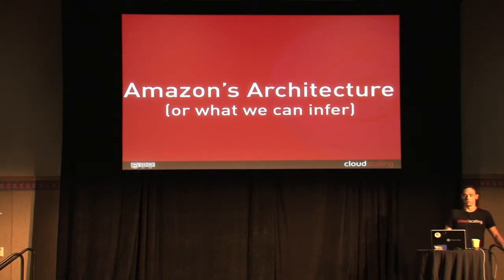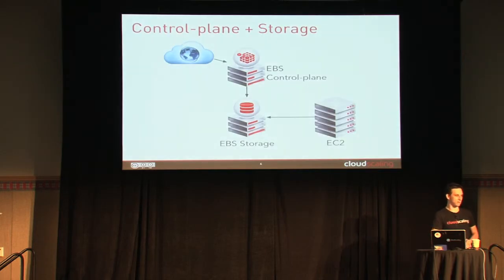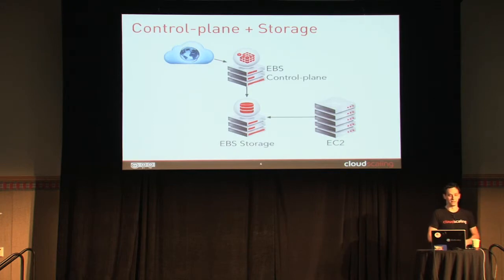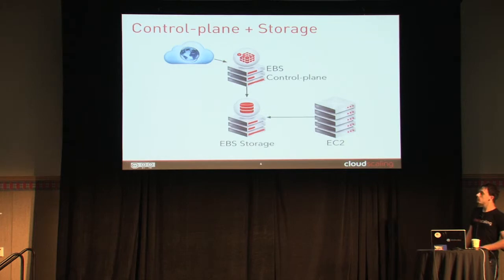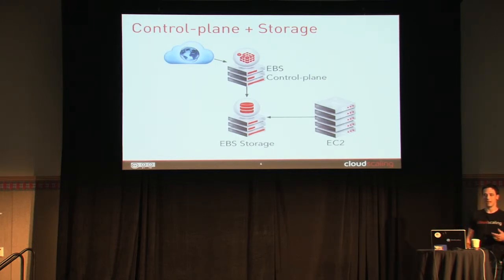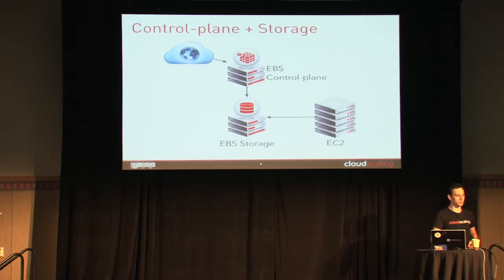We're going to start with Amazon's architecture, or at least what we can infer and what we know about it. Most of this information we've gotten from disclosures on failures that have happened and the analysis people have done on it. So you have a control plane and storage — they're separate, they're loosely coupled. So you can lose a control plane or the storage and not both. Although in practice, they've actually lost the storage and then realized that the control plane trying to control broken storage can kind of fail on them too, so they would sometimes have to shut down the control plane when they've had failures.